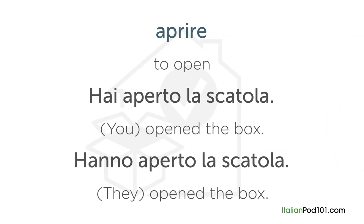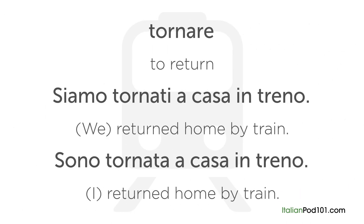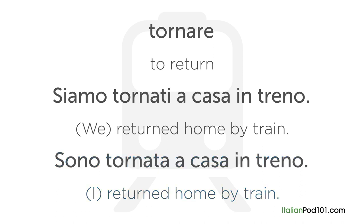For example, the verb 'aprire' means 'to open.' When you conjugate it, it changes according to the subject. 'Ha aperto la scatola' means 'you opened the box.' 'Hanno aperto la scatola' means 'they opened the box.' Another example: 'tornare' means 'to return.' 'Siamo tornati a casa in treno' means 'we returned home by train.' 'Sono tornata a casa in treno' means 'I returned home by train.' Can you see how the subject changes based on the way the verb is conjugated?